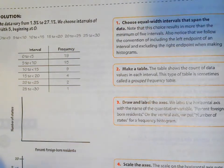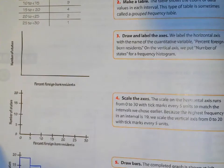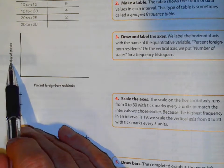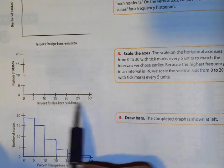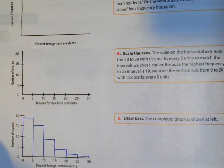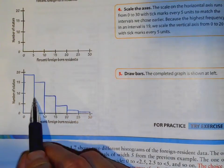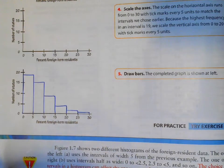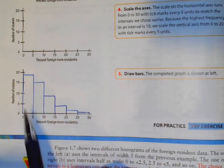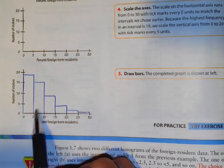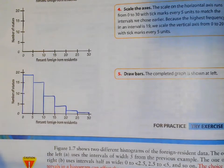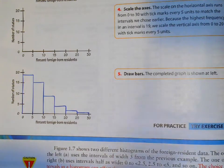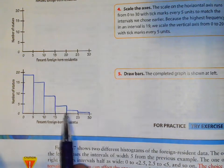So we know how often something happens. We label our axes, percent of foreign-born residents and the number of states. Then we put our things here, 5, 10, 15, 20, and the number that are in each one. We can just draw our lines. We make them right next to each other, unlike the categorical bar charts where they're split apart. In 0 to 5, we had 19 of them. If you notice, this is skewed which way? That's right, skewed to the right.